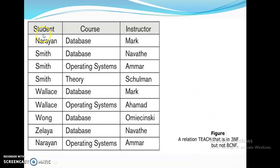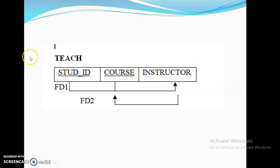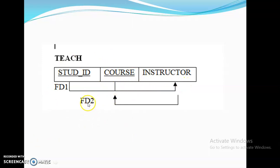The Teach schema has three attributes: Student, Course, and Instructor. Student ID and Course are prime attributes or primary keys, and Instructor is a non-prime attribute. FD1 says Student ID along with Course identifies Instructor — one student taking one course is handled by which instructor. This satisfies up to 3NF and also satisfies BCNF since X is a super key of R.